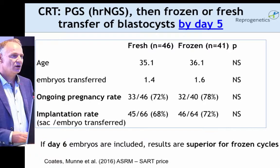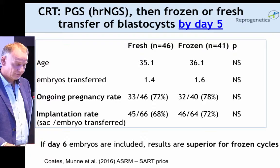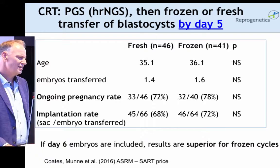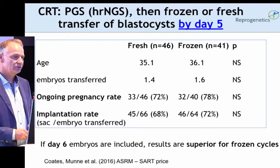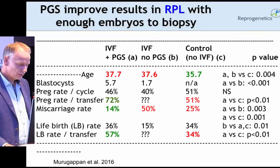But if you have enough Day 5 embryos on Day 5, it seems they do equally well whether fresh or frozen. This coincides with data from Shapiro, who also found that embryos that reach blastocyst on Day 6 are the ones that suffer the most if you transfer them on a fresh cycle.